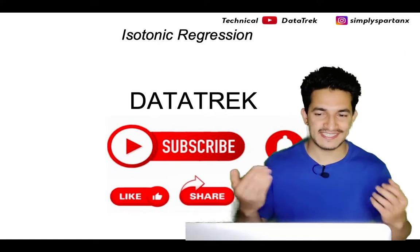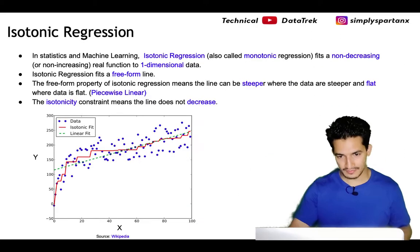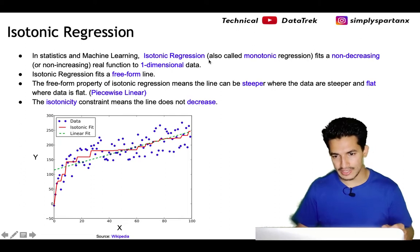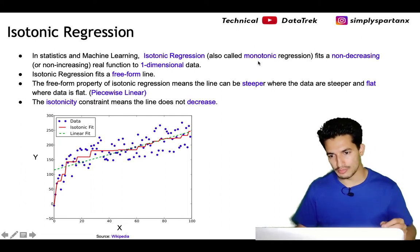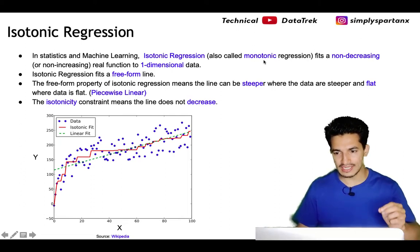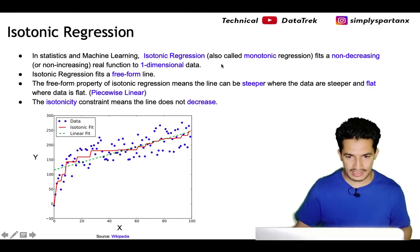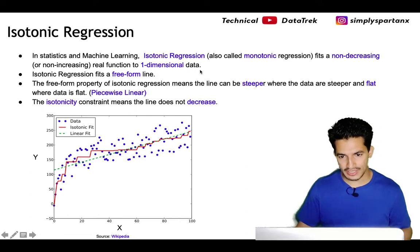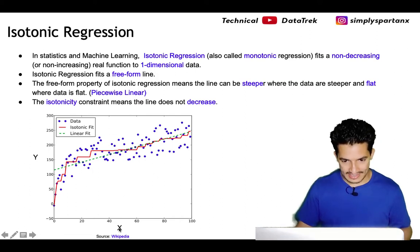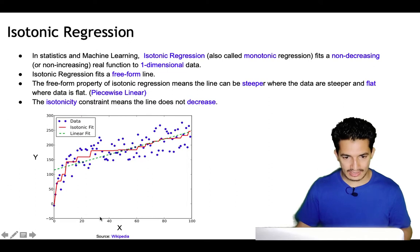In statistics and machine learning, isotonic regression is also called monotonic regression. It fits a non-decreasing real function to one-dimensional data. Like in this figure, x is one-dimensional and for each value of x we need to predict y.